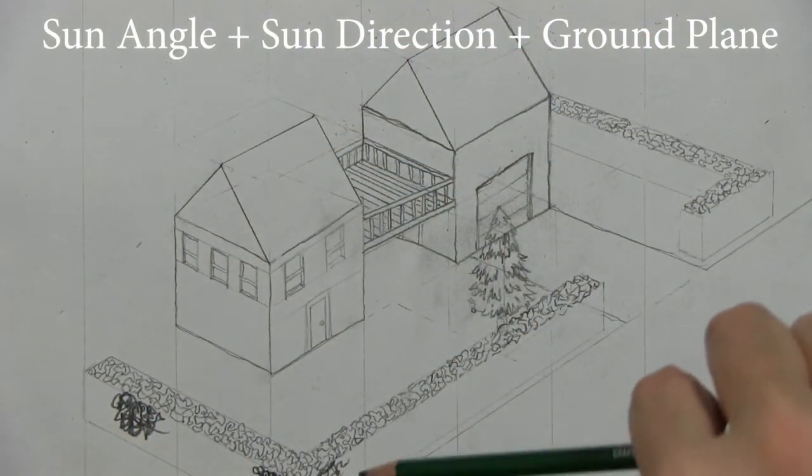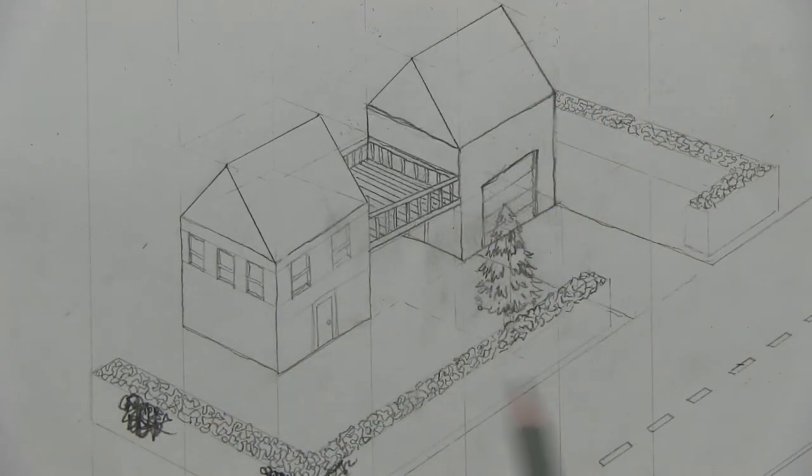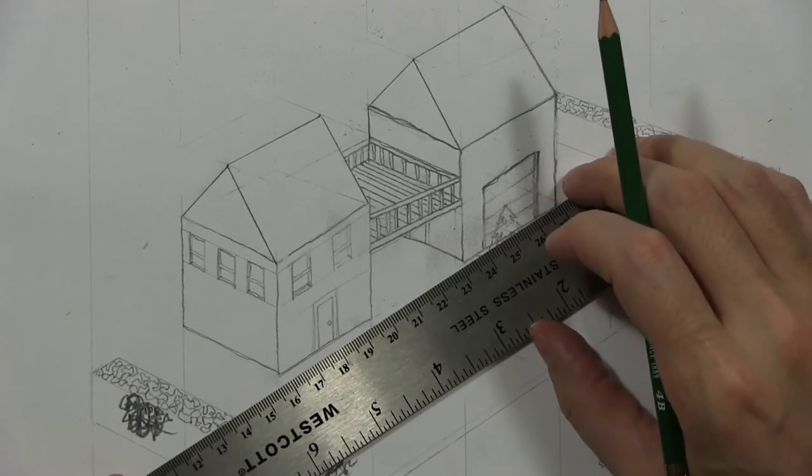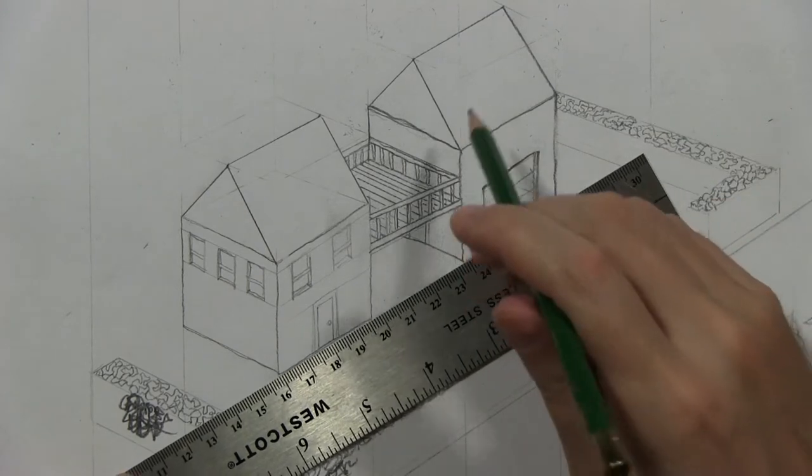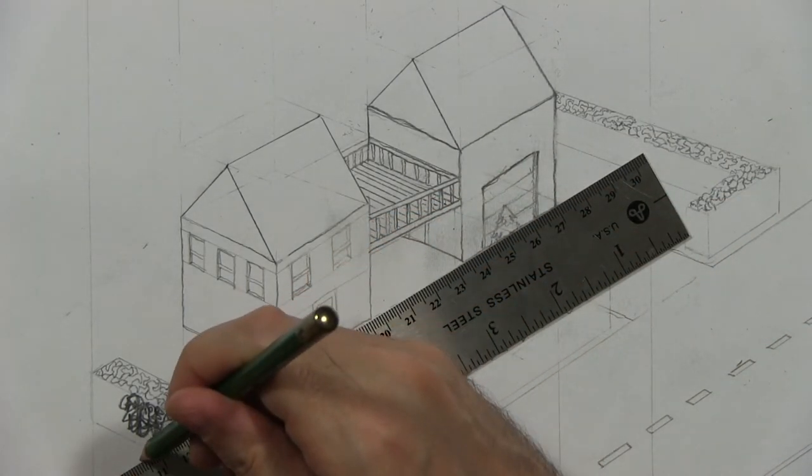We also needed to know the plane of the ground. It's simple with isometric perspective. Because what we already have is the plane of the ground. We already have this geometry going on.